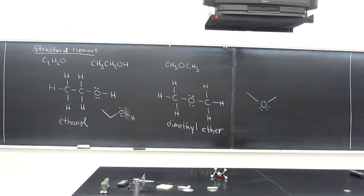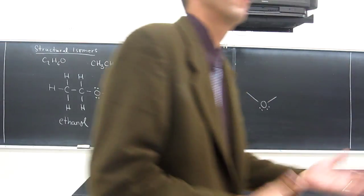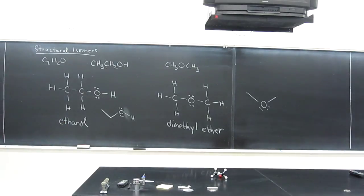So are there any questions on this stuff? The other thing you can see, so there's some more things. Ethanol is completely soluble in water. Dimethyl ether is partially soluble in water. So these kind of physical characteristics prove that they're two different compounds. They have different melting points, different boiling points, so on and so forth.